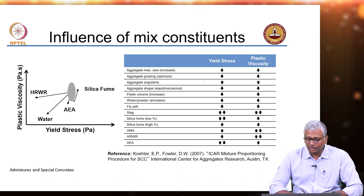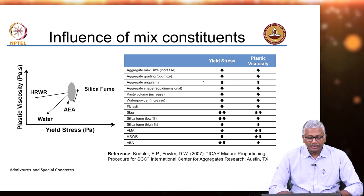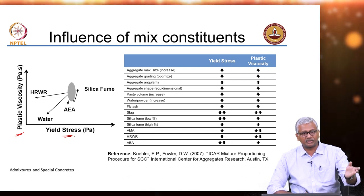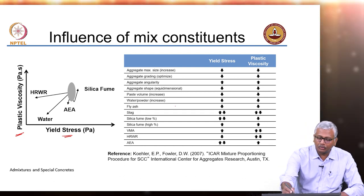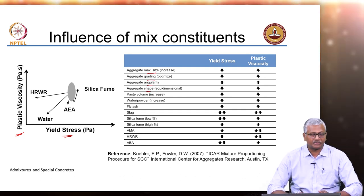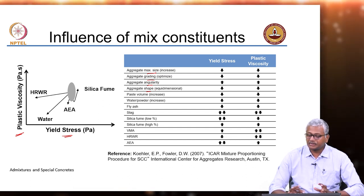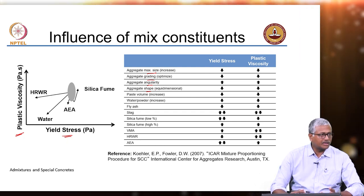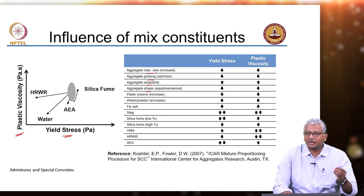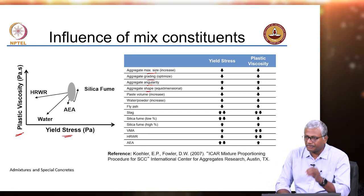A paper by Kohler and Fowler from 2007 looked at the use of air entraining agents, high range water reducers, water, and silica fume, plotting yield stress versus viscosity with interchanged axes. They examined the effects of aggregate size, grading, angularity, shape, and mix constituents including paste, water, fly ash, slag, silica fume, VMA, and high range water reducers. Rheology needs to be understood separately for normal concrete, flowable concrete, and 3D printed concrete, as basic behavior does not change much but system-specific understanding is essential.